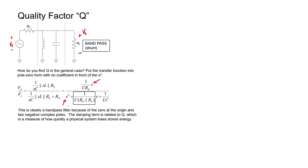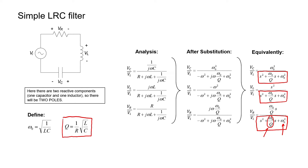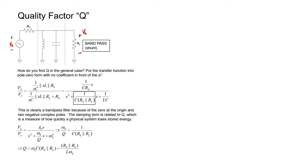That's what we expect for a bandpass filter. If we write the denominator of the transfer function in the same form as we had for the series LRC filter, we expect an s-squared term plus something times s plus omega-naught squared. We can thus identify one over LC as being our omega-naught squared, and we can identify the term in the box as omega-naught over Q. Omega-naught over Q then is just one divided by C times the two resistors in parallel. Knowing omega-naught, we can then find Q. Q for this filter winds up being RS in parallel with RL divided by L times omega-naught.